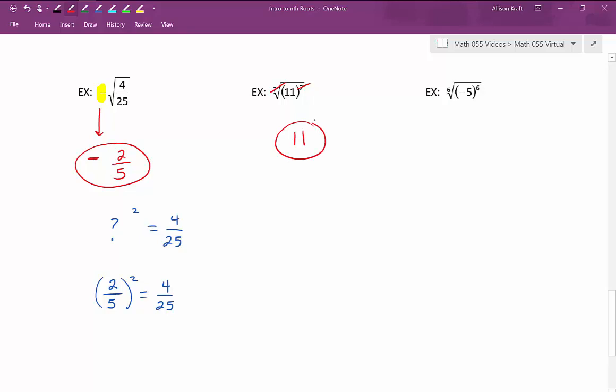Lastly, we have the sixth root of negative 5 raised to the sixth. So I'm looking at the number inside the parentheses. The number is negative. We have to be careful when the number underneath is negative. If our index is even, this is not going to yield a real number. I look at my index. My index is 6, which is even. So that radical and exponent, they're not going to cancel out. This is not a real number.